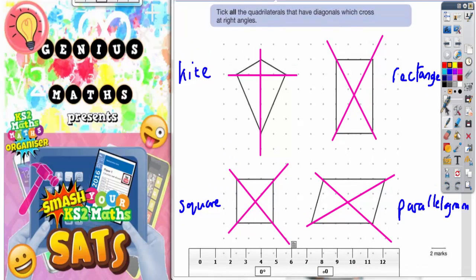So tick all the quadrilaterals that have diagonals cross at a right angle. So let's test them. It's just a matter of whether or not you can spot a right angle at 90 degrees. So the kite, right angle there, right angle there, four right angles around the point where the diagonal crossed. So that one definitely needs to be ticked.